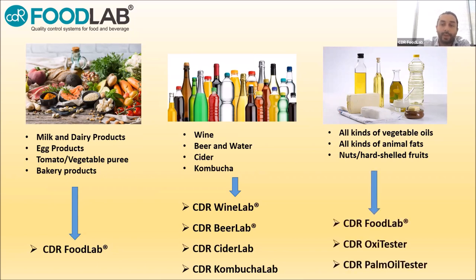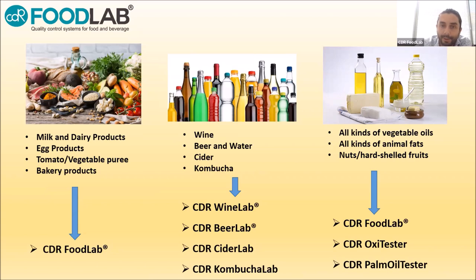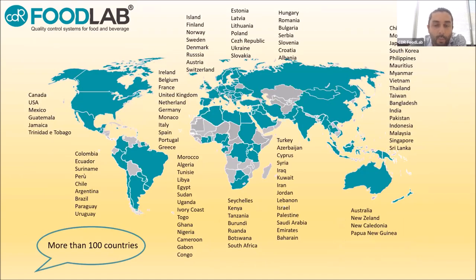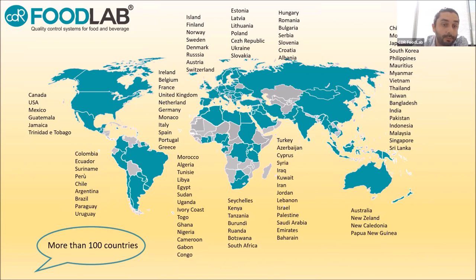In the oil sector we work again with the CDR Food Lab, and we have two dedicated analyzers: the CDR Oxytester, specific for olive oil, and the CDR Palm Oil Tester, specific for palm oil. As CDR we work all over the world — we sell in more than 100 countries, using distributors or also directly. This is thanks to the fact that the analyzer is very easy to use, so the customer can easily open the box, set up the analyzer, and start running analysis.